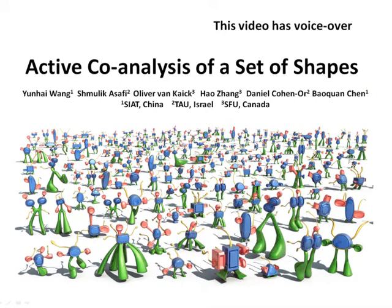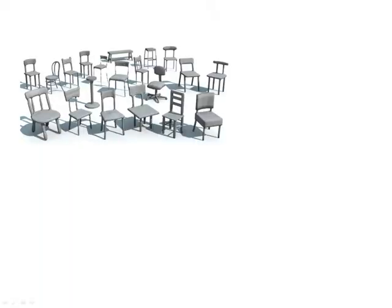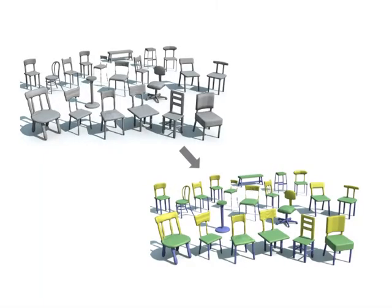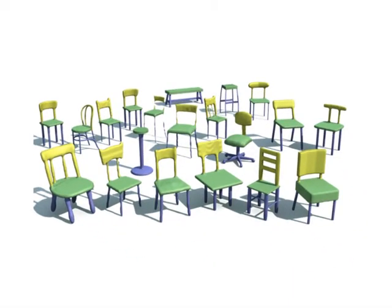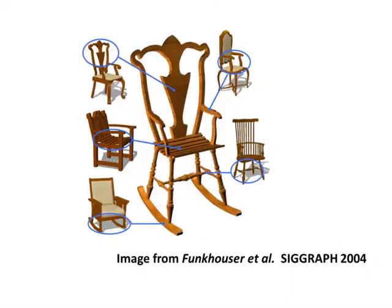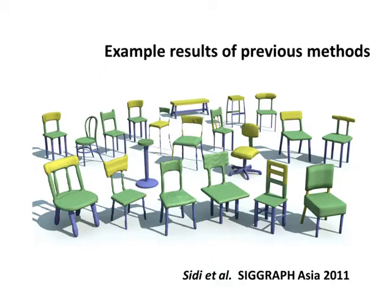Recently, there has been much interest in the co-analysis of sets of shapes. Co-analysis can provide a consistent segmentation and thus part correspondence across a set, which is an essential prerequisite to several shape modeling tasks, in particular modeling by part recomposition. However, such tasks typically need a co-segmentation to be close to error-free, something that is still difficult to achieve by state-of-the-art supervised or unsupervised methods.